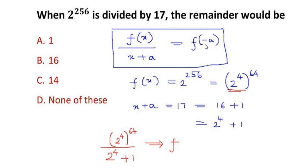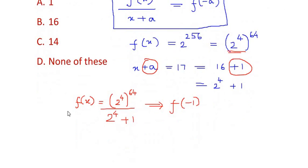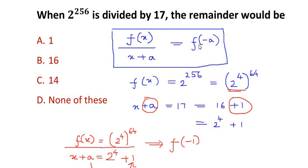So here you can see, in place of a we have plus 1. So if it is minus a, it changes to minus 1. This was my f(x), the numerator, and the denominator was x plus a. So just by comparison, a is equal to 1, so if it is minus a here, it turns out to be minus 1.